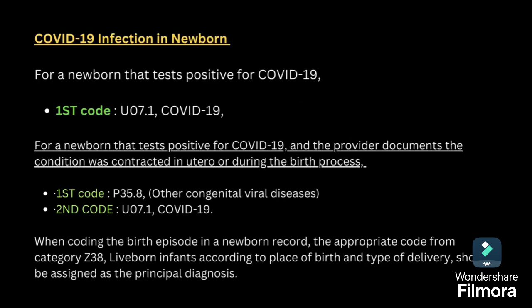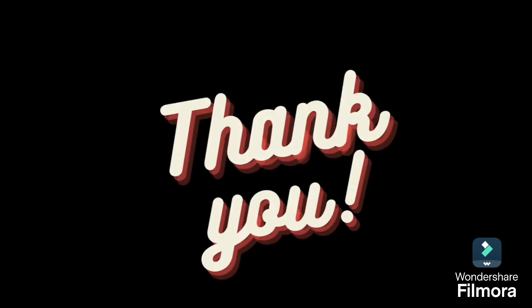Next is COVID-19 infection in the newborn. For a newborn who tests positive for COVID-19 after birth, you code COVID-19 as U07.1. For a newborn that tests positive for COVID-19 and the provider documents the condition was contracted in utero or during the birth process, first code for other congenital viral disease P35.8, and second code for COVID-19 U07.1.